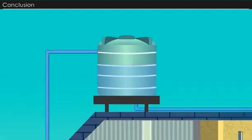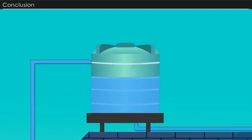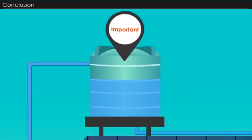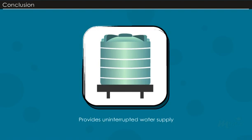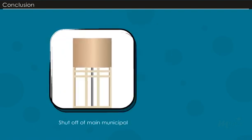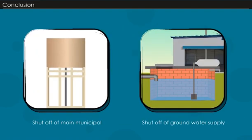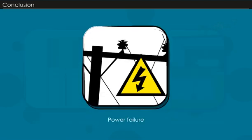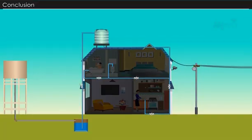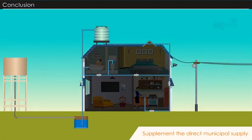Conclusion. Storage of water in tanks within the premises of a building is very important because it ensures uninterrupted water supply in the building in case the main municipal or groundwater supply is shut off for repairs or if there is a power failure. It may also help to supplement the direct municipal supply in case of excess or peak demand.